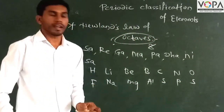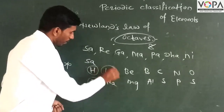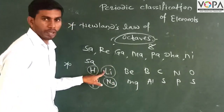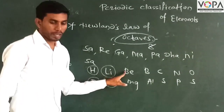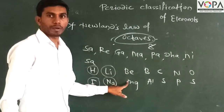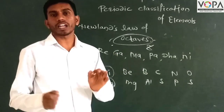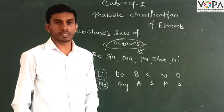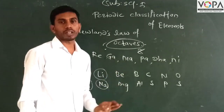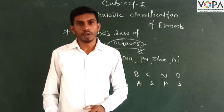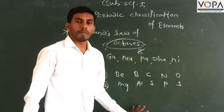In 1866, he also created a significant classification. The first element of the group is called octaves. So you would also have potassium, which is followed by calcium.